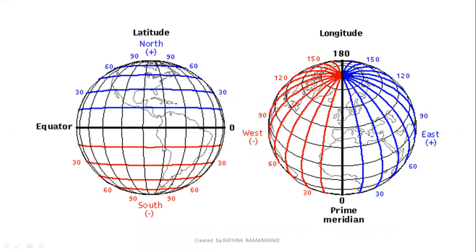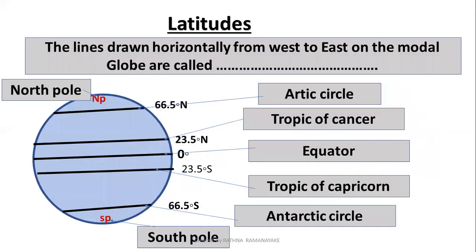The lines drawn horizontally from west to east are latitudes. How many latitudes are there on the model globe? There are 180 latitudes — 90 north latitudes and 90 south latitudes.